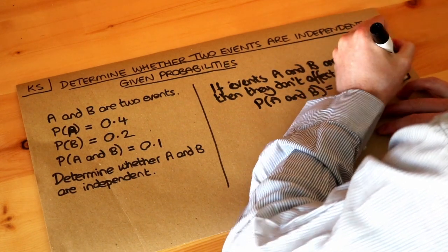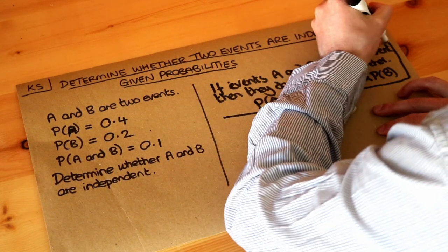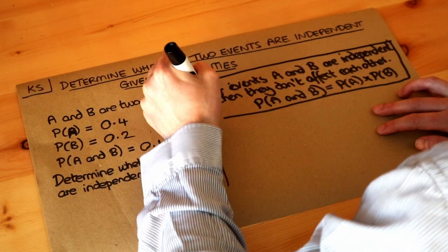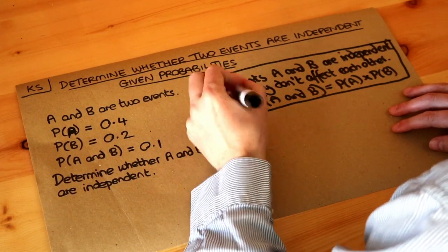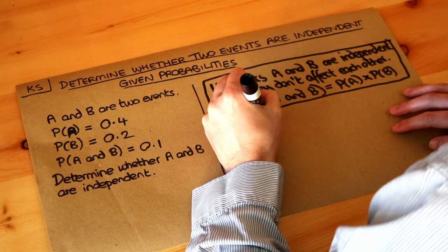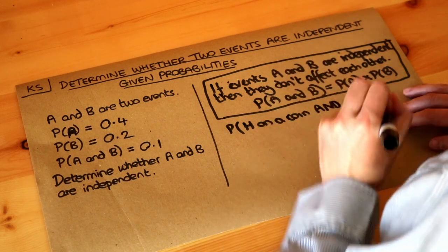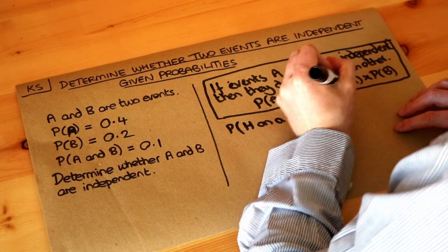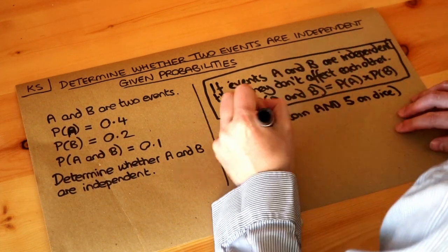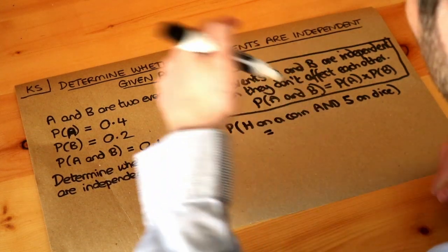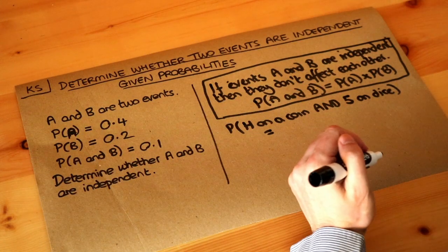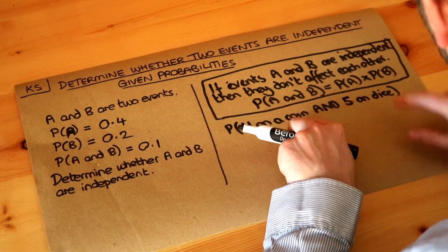Just to give a quick example that we can relate to, if you want to find the probability of getting a head on a fair coin and then you throw a dice and you get a five on a fair dice, we want to find the probability of them combined, so we've got the head on the coin and the five on the dice.